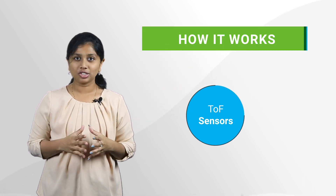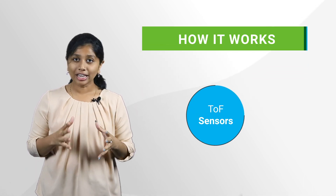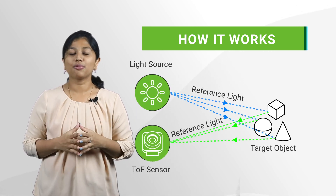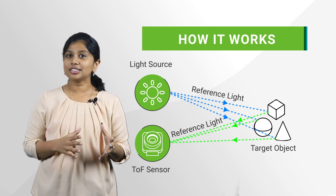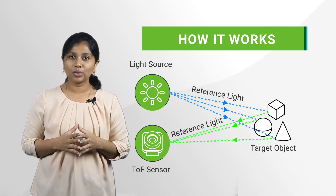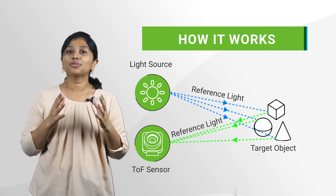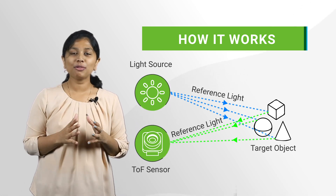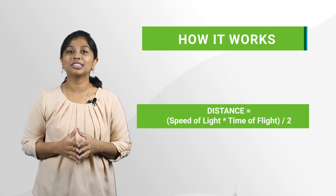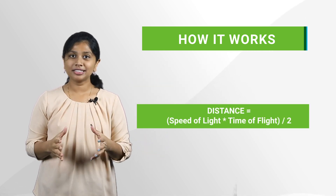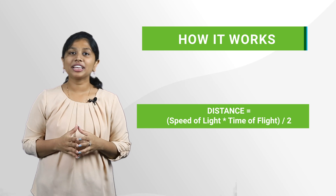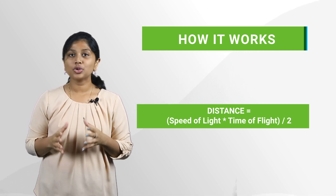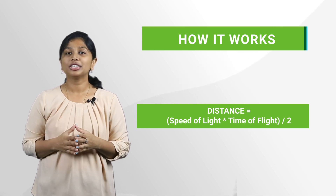Time-of-flight sensors work based on the light illumination technique, wherein the sensor emits light to the target object and collects the reflection from it. The distance or depth to the target object is then calculated using the time it takes for the light to return to the sensor. The calculation is done using a simple formula: distance equals time multiplied by speed — in this case, the time of flight multiplied by the speed of light. This value is then divided by two to account for the back-and-forth travel.